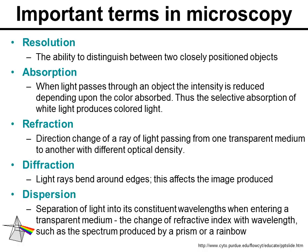Diffraction is the bending of light rays around edges, and how that bending affects the image produced by the microscope. Last but not least, dispersion is the capacity to separate light into constituent wavelengths when entering a transparent medium — think of a prism. When white light enters a prism, the light is dispersed and you get a rainbow. The change in refractive index with wavelength, such as the spectrum produced by a prism, is a perfect example of dispersion. Next slide.